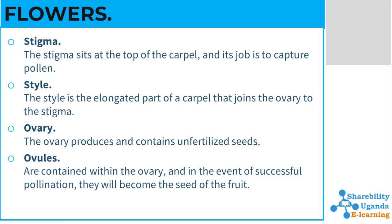The stigma sits at the top of the carpel — I want you to research about the carpel and make notes about it — and its job is to capture the pollen. The style is the middle part of the carpel that joins the ovary to the stigma. The ovary produces and contains unfertilized seeds, and after fertilization, they become the seeds of the plant.